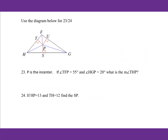For the diagram below, P is the incenter. Incenter means the point where the three angle bisectors meet. So each pair of bisected angles is equal. These two equal each other, these two equal each other, and these two equal each other. If angle TFP equals 55 degrees and angle HJP equals 20 degrees, we want to find angle THP. Let's label it as X. Because this is 20 degrees, then this is also 20 degrees. This will be 55 degrees, and this angle is 2X.